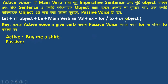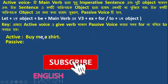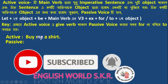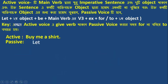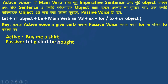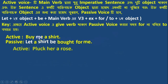So, the personal (indirect) object is identified. The passive voice is formed by placing 'Let' first, then the direct object (first object), followed by 'be' and the past participle, with the first object placed appropriately in the passive structure.